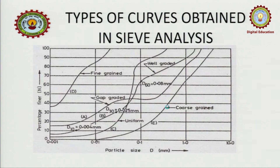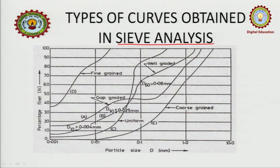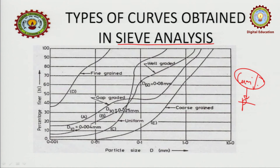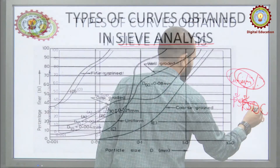First of all, see this graph. If you remember, I have already talked about sieve analysis, or the particle size distribution curve. We have already seen these in detail. We know how these curves are formed, how the cumulative percentages are found out, and how the curve is made — the particle size distribution curve.